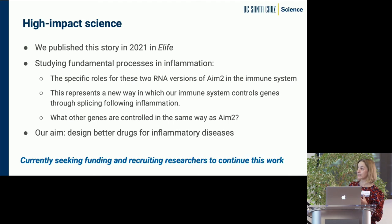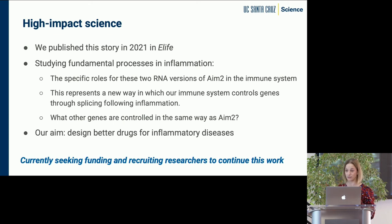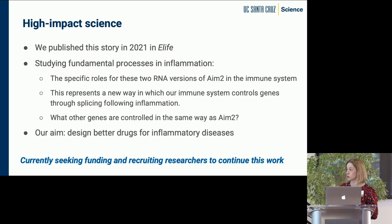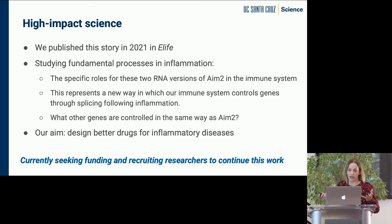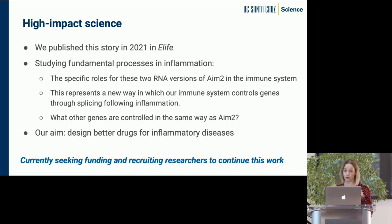We're very excited about this particular area of research. We published this first study just last year, and we think this is so interesting because it really gets to the heart of understanding the fundamentals of inflammation. We've identified these two new versions of this protein and are now trying to dig into exactly which one does what. We also identified 100 other proteins that are regulated in a similar manner. So we want to ask: beyond AIM2, how exactly are they being regulated, and will this really help us understand inflammatory diseases? Because if we can design better, more targeted drugs, we can have an impact on a whole host of diseases.